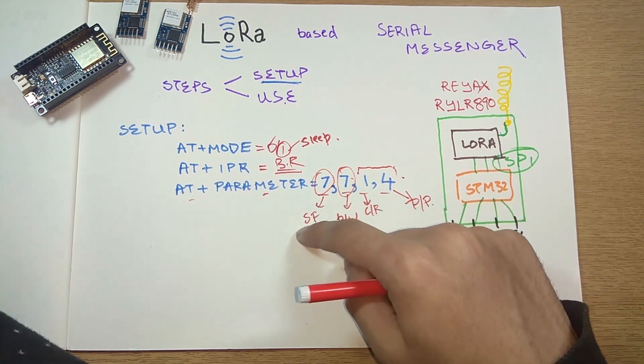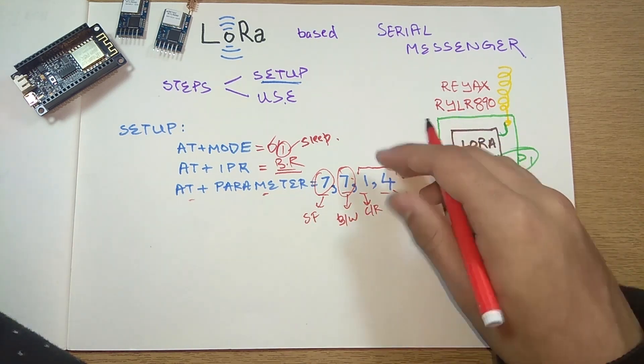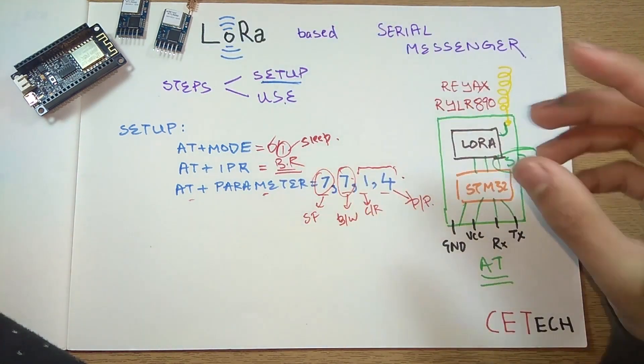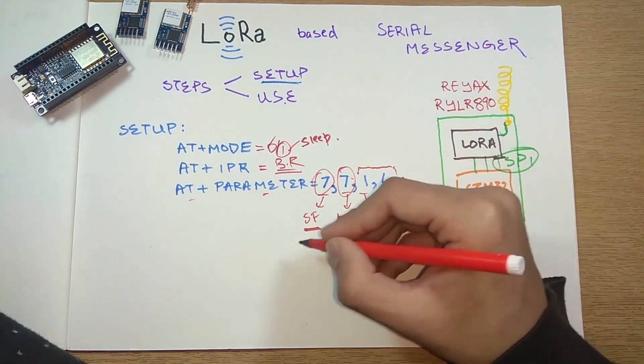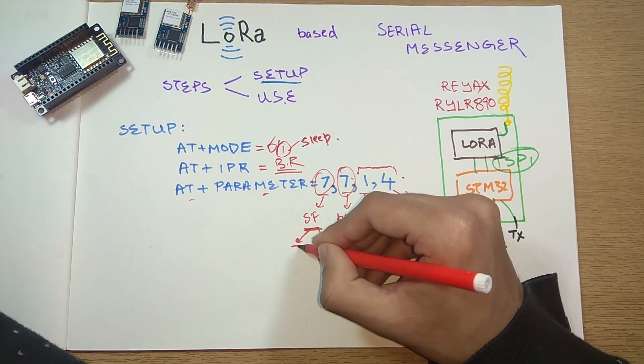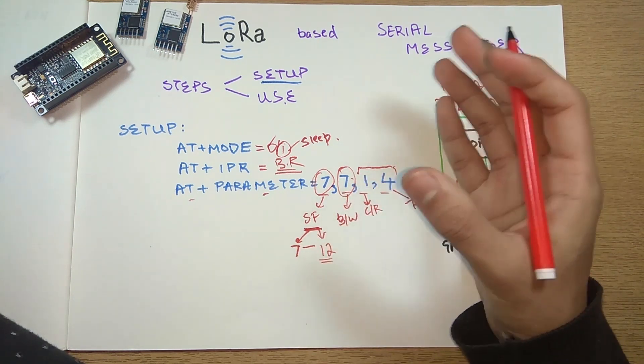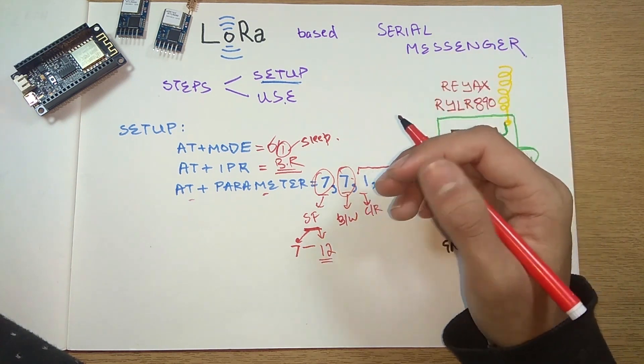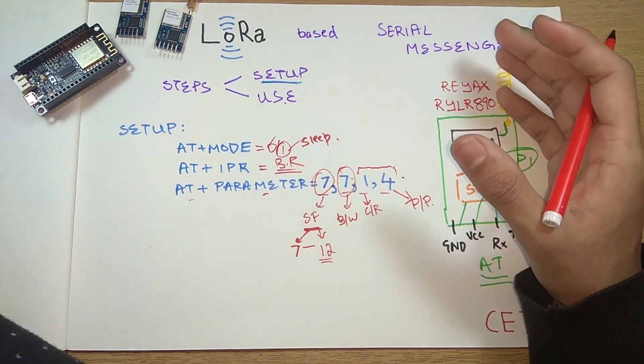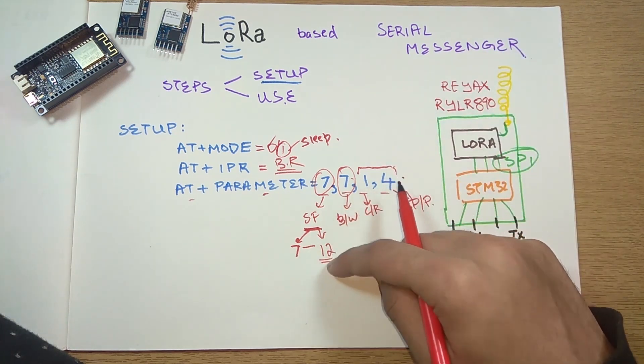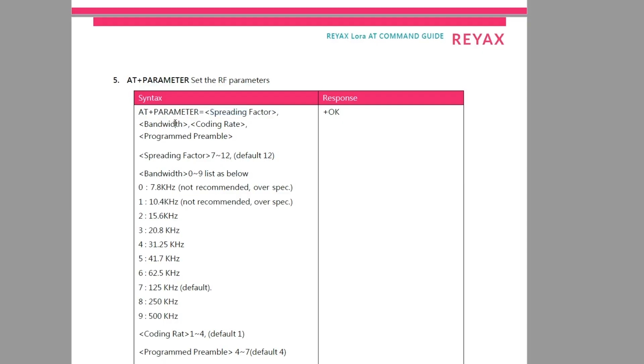Apart from that, they determine the range. The spreading factor ranges from 7 to 12. The more the spreading factor, the less the data speed you can achieve, but the better the distance. With a more spreading factor, you can get more range.